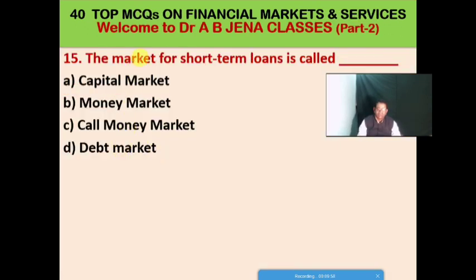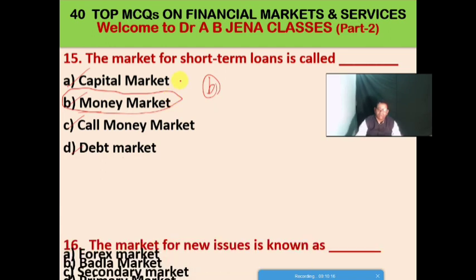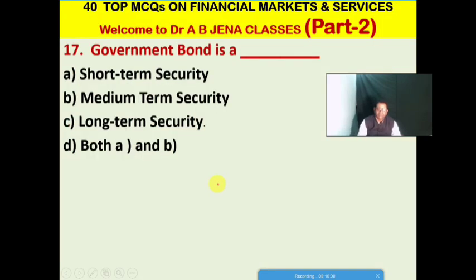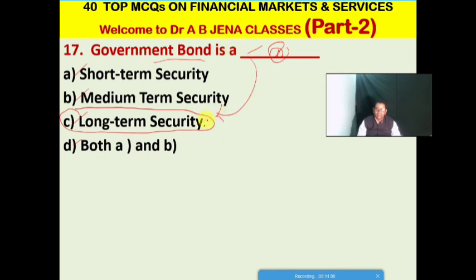Next MCQ: the market for certain loans is called what? A: capital market, B: money market, C: call money market, D: debt market. B is the right option. Next MCQ: the market for new issues is known as what? The primary market or the new issue market. Next MCQ: government bond is what type of security? A: short term, B: medium term, C: long term, D: both A and B. C is the right option — government bond is a long term security.